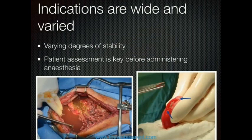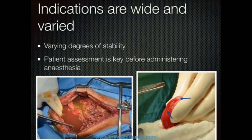When considering doing an exploratory laparotomy, the first thing we need to recognize is that there are a huge number of indications that are wide and varied, and patients can present in various degrees of stability. This is really important to consider because we have to give these patients a general anesthetic, and you have to consider whether the patient is actually stable enough for that anesthetic before you get started. This initial patient assessment is key — it's better to recognize a problem beforehand rather than afterwards.